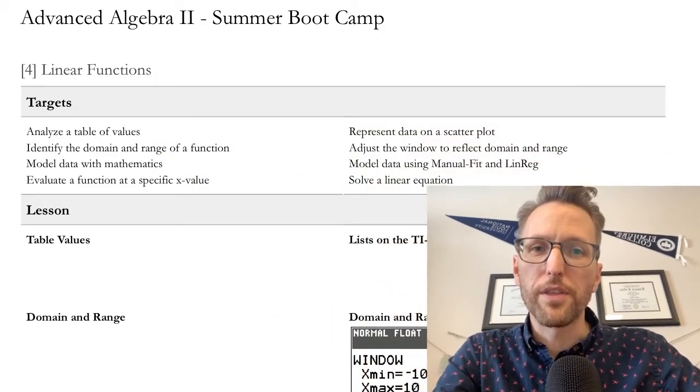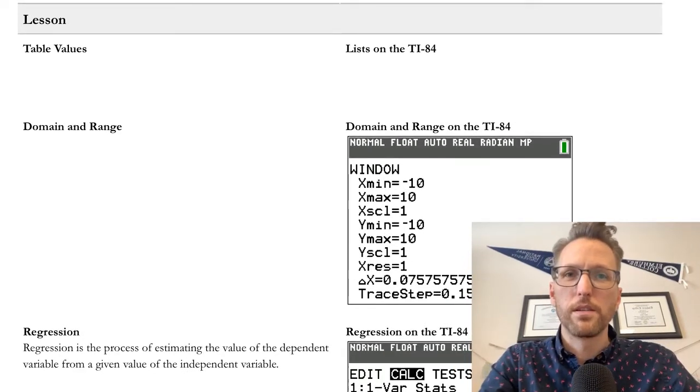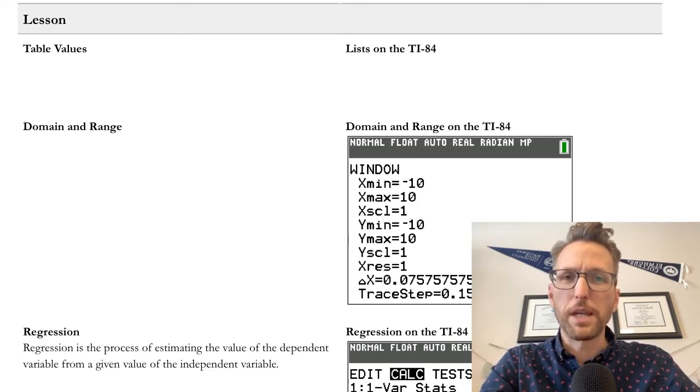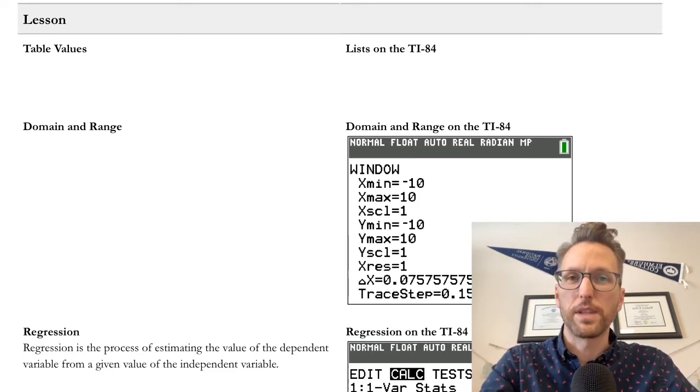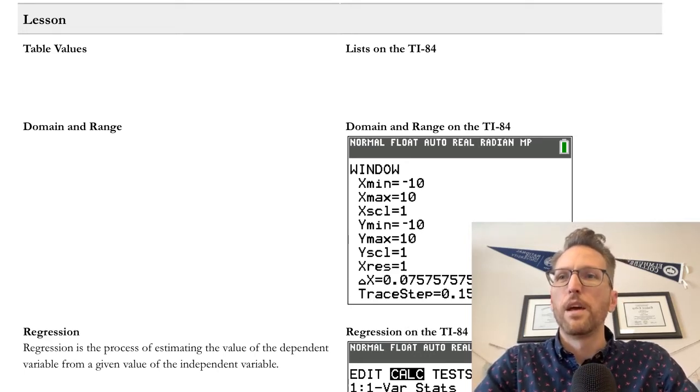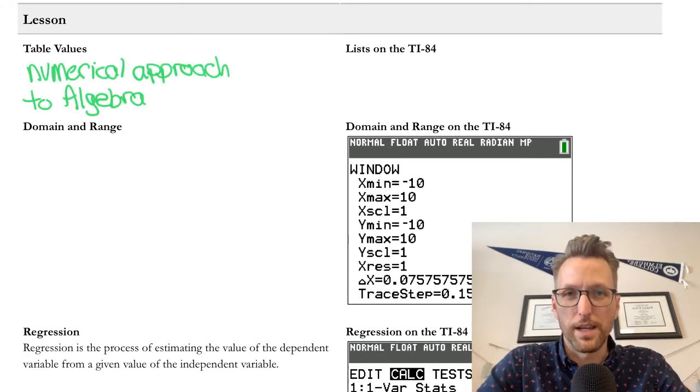Let's start with Table Values. That's good. Table Values, what do I mean by that? I mean a table, a two-column thing with information, data, numbers inside of it. And usually we deal with two columns, either vertically or horizontally. So Table Values, this is taking a numerical approach to algebra.